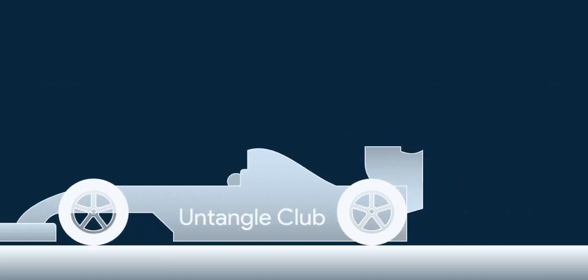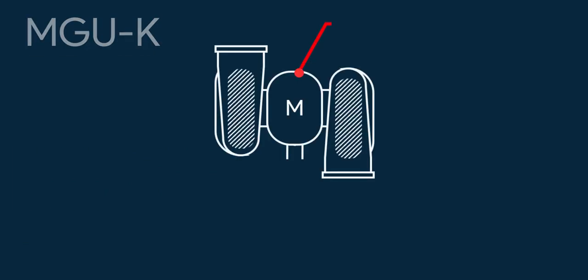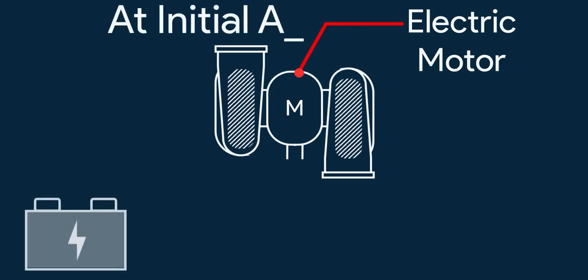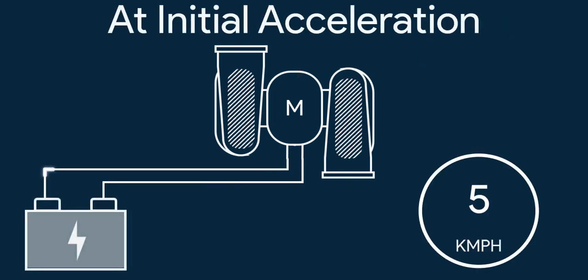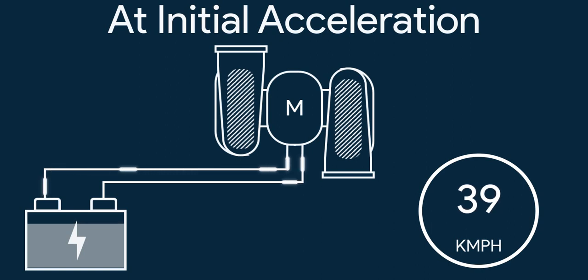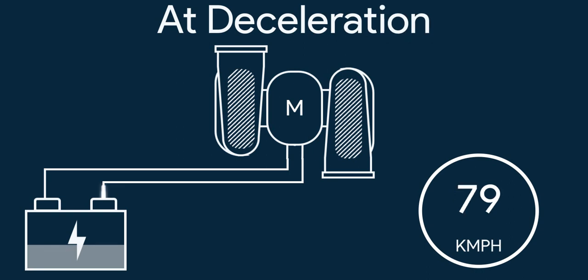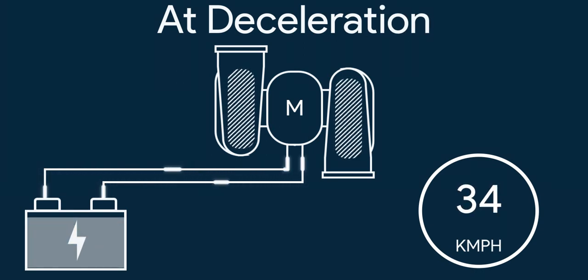Next is the electrically assisted turbo. This is mostly found in F1 cars, where it's called the MGU-H. It's a turbo with an electric motor. At initial acceleration, the battery powers the electric motor which spins the turbo shaft, so the turbo spools up and gives instant boost even at low revs. At deceleration, the motor can also act as a generator, restoring energy back to the battery.